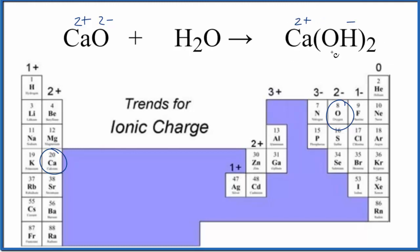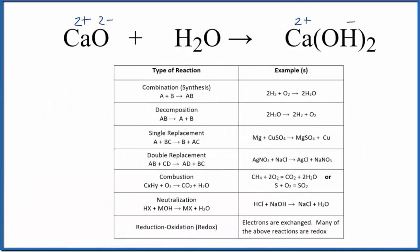We could also look at the 2 plus and figure out that the hydroxide has to be 1 minus, if we have two of those. So this is a combination, also called a synthesis reaction, between calcium oxide plus water, and that gives us our calcium hydroxide here.